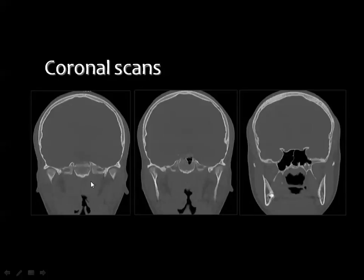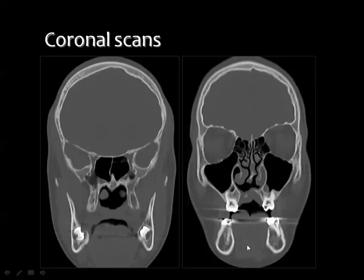The head of the mandible articulates with the temporal fascia. This is the sphenoid sinus, the ramus of the mandible, the pterygoid blades on both sides. More anteriorly you can see the pterygoid blades, the ramus of the mandible, the sphenoid sinus, the hard palate, the bony nasal septum, maxillary sinuses, ethmoidal air cells, orbital cavities, superior orbital wall, orbital roof and floor.